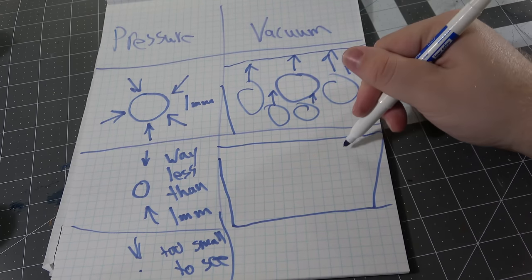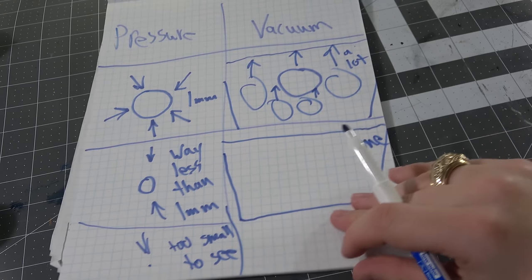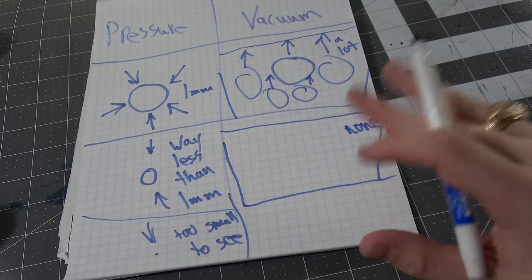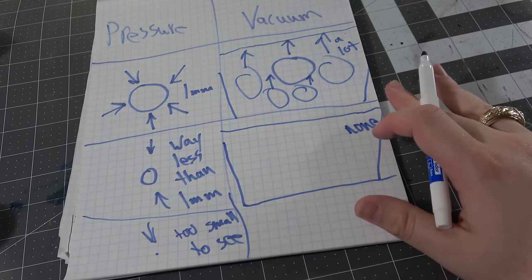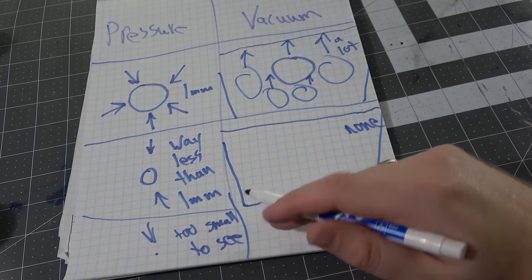This top one up here has a lot, this bottom one here has none, but there are downsides to this based off of the material that you're using. Resin is sticky, so let's get into showing you now that you know how a vacuum works and how a pressure pot works.